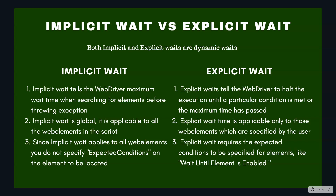So if you set an implicit wait of 10 seconds, it will be applicable for all web elements in the script when the script is running and trying to find those elements. The timeout you specify in implicit wait is applicable for all web elements. You just need to specify it once in your script and it will apply everywhere — you do not need to do this for specific web elements.